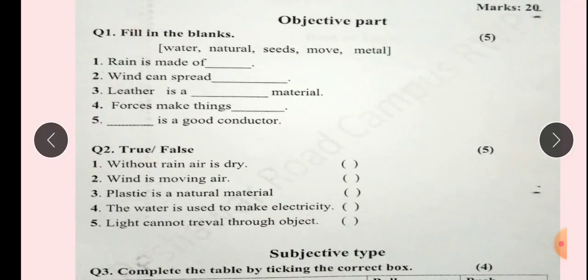Question number 1, Fill in the blanks. You have to use these words to fill in the blanks: Water, Natural, Seeds, Move, Metal. Number 1: Rain is made of blank. Number 2: Wind can spread blank. Number 3: Leather is a blank material. Number 4: Forces make things blank. Number 5: Blank is a good conductor.